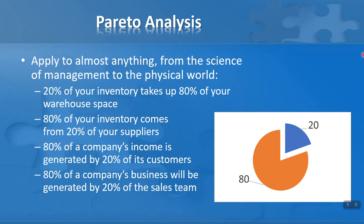We can apply Pareto analysis to almost anything, from the science of management to the physical world. For example: 20% of your inventory takes up 80% of your warehouse space — you'd need to be managing that 20% very carefully. 80% of your inventory comes from 20% of your suppliers — so who are those critical suppliers? 80% of a company's income is generated by 20% of its customers — identifying that 20% are the most important ones to look after. And 80% of a company's business might be generated by 20% of the sales team — those are the salespeople you want to look after best.